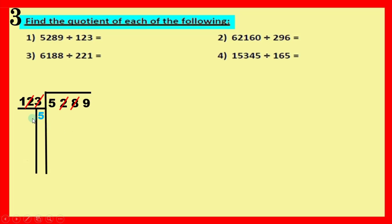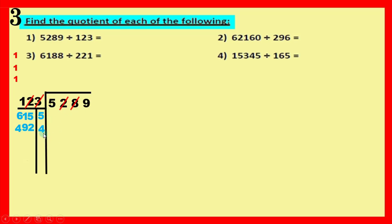Five times three equals fifteen, write five and carry one; five times two equals ten, ten and one equals eleven, write one and carry one; five times one equals five, five and one equals six — giving six hundred and fifteen. But we only have five hundred and twenty-eight, so five is too big. Try four: four times three equals twelve, write two and carry one; four times two equals eight, eight and one equals nine; four times one equals four — giving four hundred and ninety-two. That works.